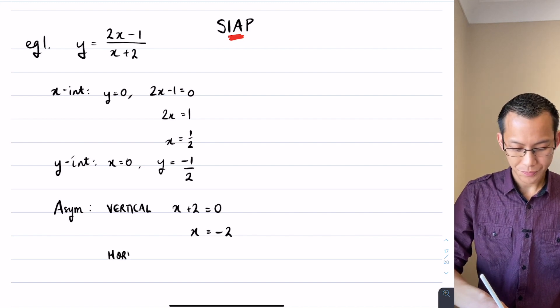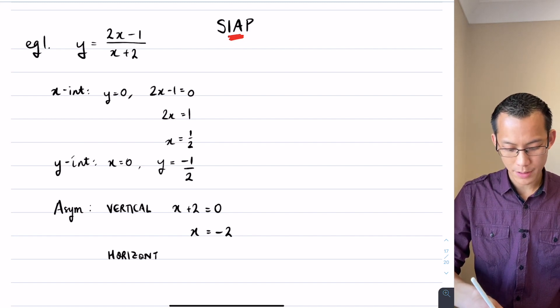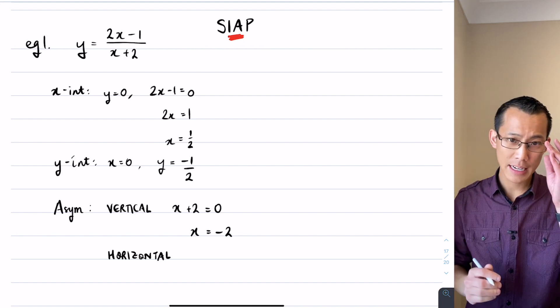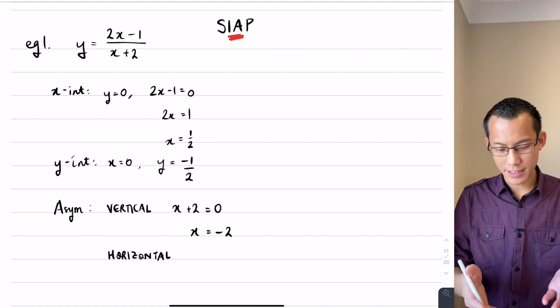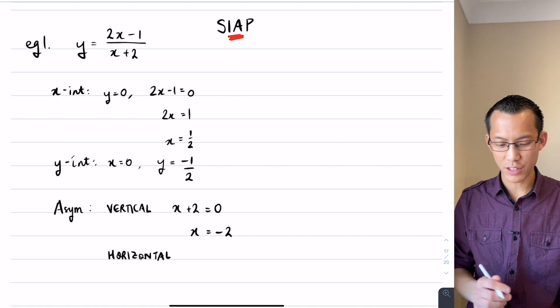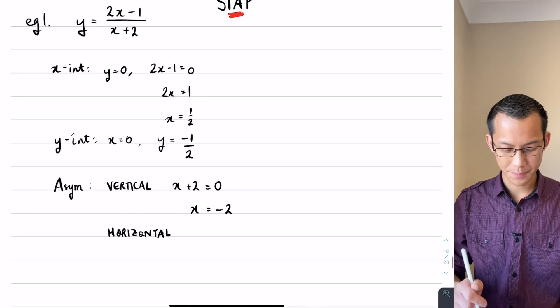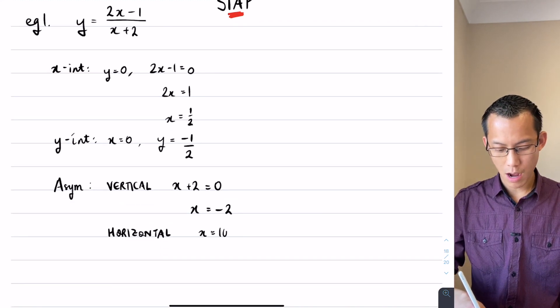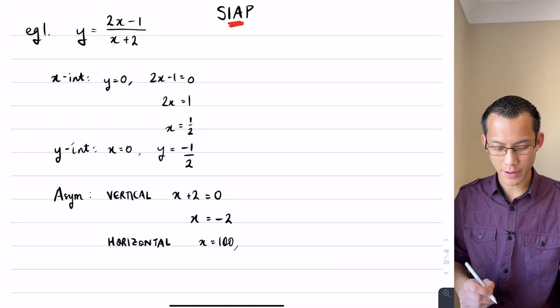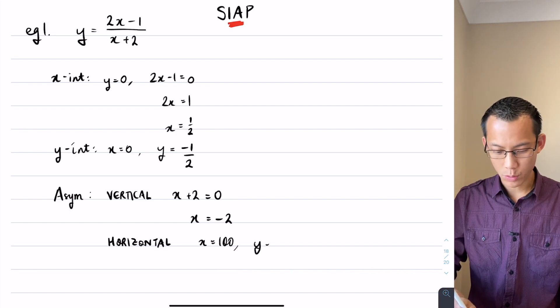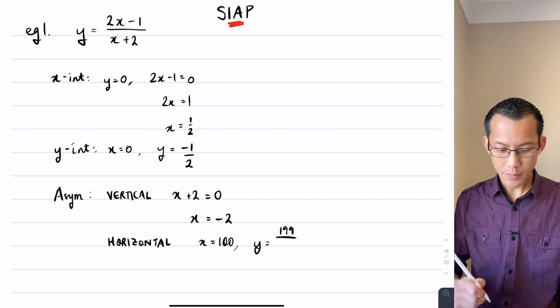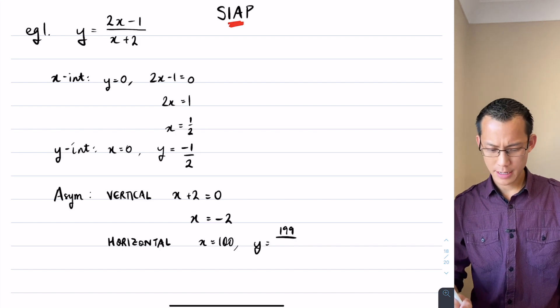What about the horizontal asymptote? Well I'm going to think about what happens when you put in really large values of x, both on the positive side and the negative side. Now as an example, there's more than one way to do this, but I'm going to just give you the simplest way. Let's just think about a couple of values like say x equals 100. If x were equal to 100, what would you get for your y value? Like this is a large value of x.